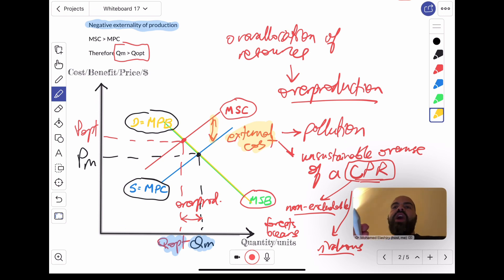Okay? So, once again, when you have a negative externality of production, the MSC will be higher than the MPC because there's an external cost imposed on society. That external cost could be pollution or an unsustainable over-use of a natural resource or a common pool resource. That leads to a situation where the quantity produced by the market, QM, is greater than the quantity that society, from society's point of view, is the optimal quantity that should be produced. There's a problem of over-production.